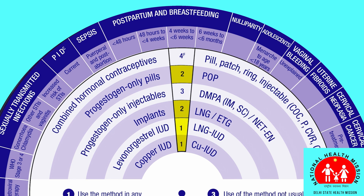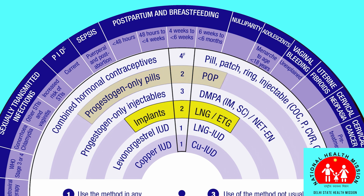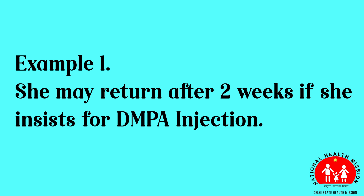These alternatives include the progesterone-only pills, the implant, and either the hormonal IUD or the copper IUD. Or she can return after two weeks if she wants to start the injection.